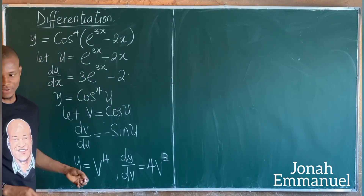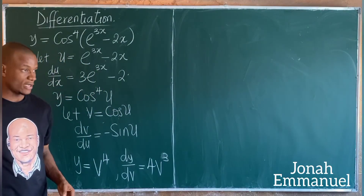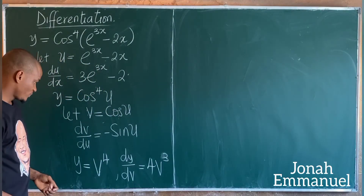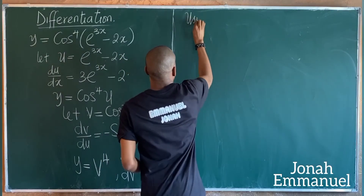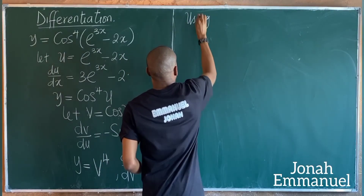Differentiating y with respect to v gives dy/dv equals 4v to the power 3. Using chain rule: dy/dx equals dy/dv times dv/du times du/dx.